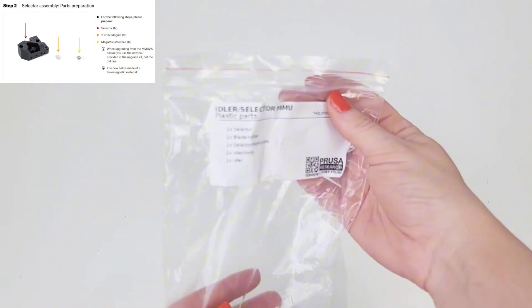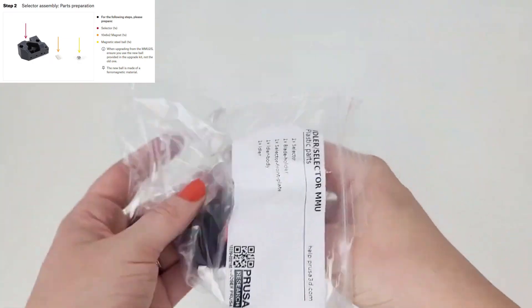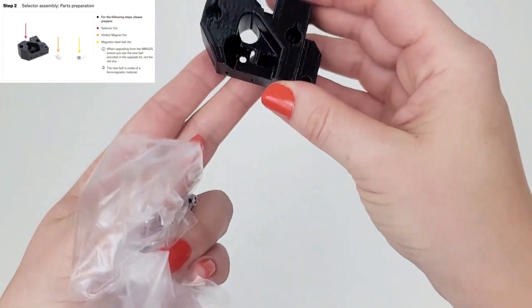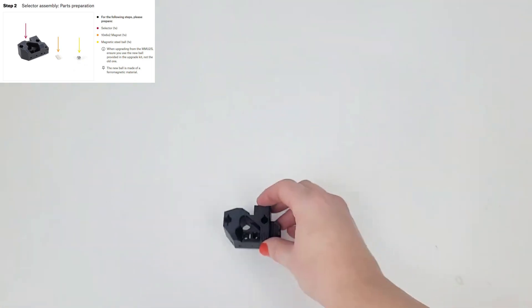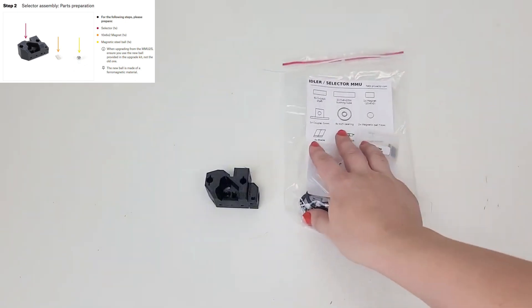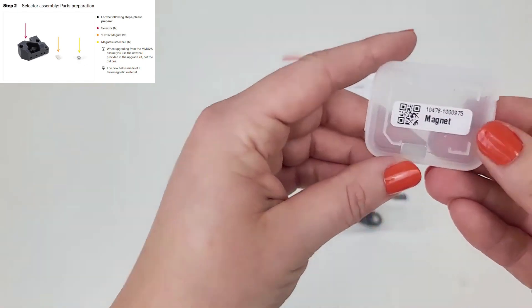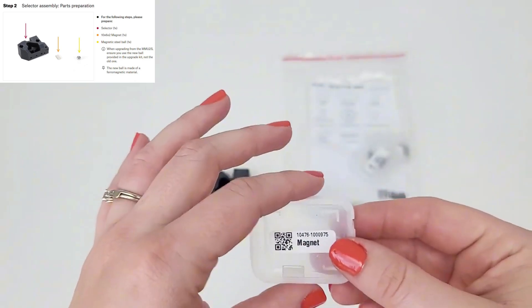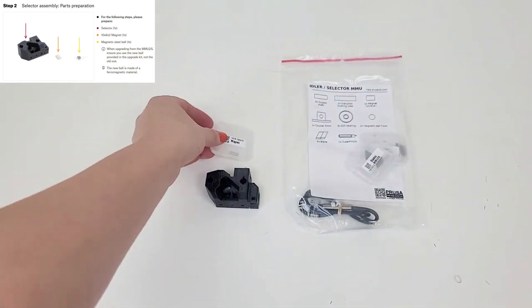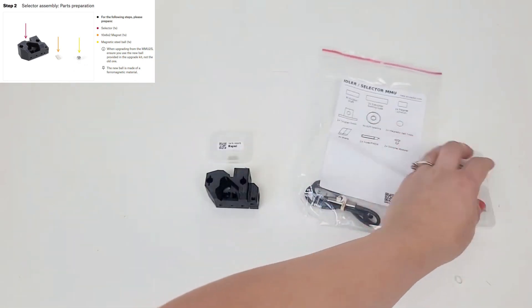We need to find the selector. We're still on the idler selector MMU. The selector's in here. We're looking for this, a magnet, and a magnet ball. Those were in this bag.